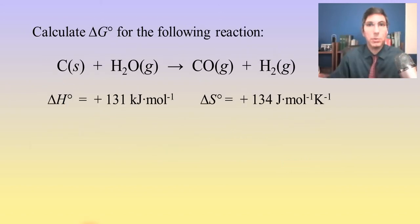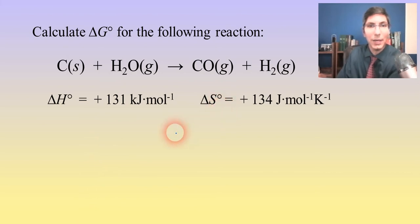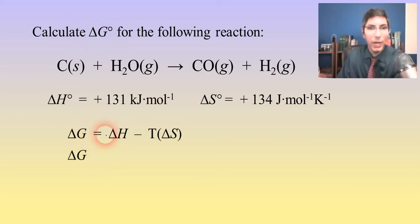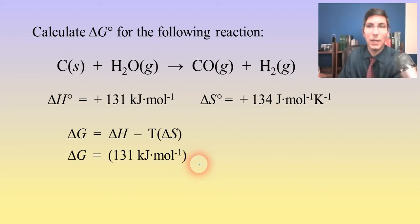Let's calculate delta G for a reaction we dealt with in the last video: carbon plus water vapor yields carbon monoxide gas and hydrogen gas. We have the two values for delta H and delta S, so we're going to plug and chug into the equation. Delta H is positive 131 kilojoules per mole. Now, what's the temperature? The problem doesn't come right out and tell us, but we can figure it out.